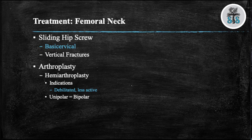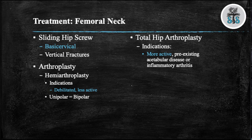Hemiarthroplasty can be used in displaced femoral neck fractures and is more appropriate for the debilitated or less active patient. There is no difference between a unipolar or bipolar head. Total hip arthroplasty is indicated in more active patients, patients with pre-existing acetabular disease, or inflammatory arthritis. Total hip arthroplasty has a higher dislocation rate, greater blood loss, larger exposure, longer operative time, and higher risk of infection, but it is best at relieving pain, has fewer re-operations, and the best survivorship.